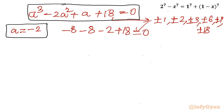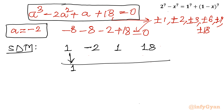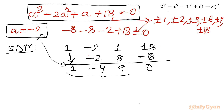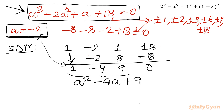Now we proceed with synthetic division. Writing the coefficients: 1, −2, 1, 18, with root −2. Bringing down 1, then: −2 × 1 = −2, sum gives −4; −2 × (−4) = 8, sum gives 9; −2 × 9 = −18, sum gives 0. The remaining quadratic equation is a² minus 4a plus 9 equal to 0.